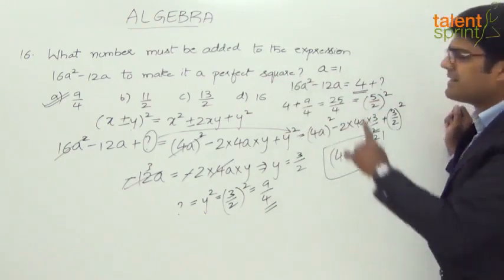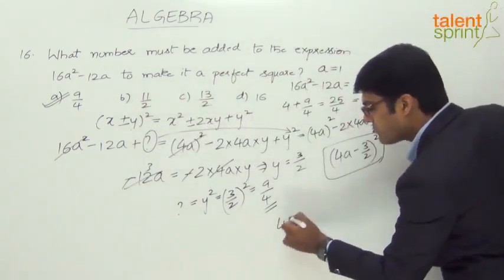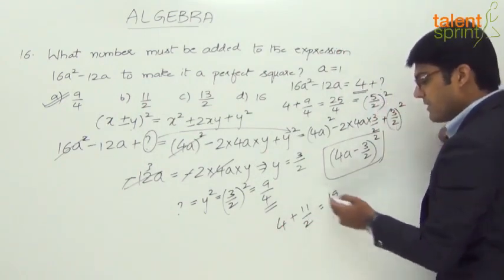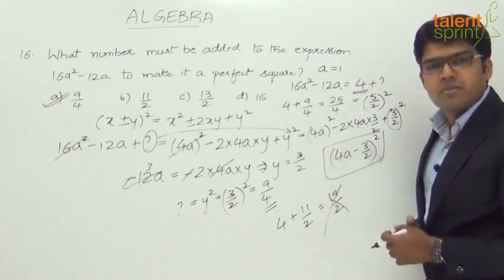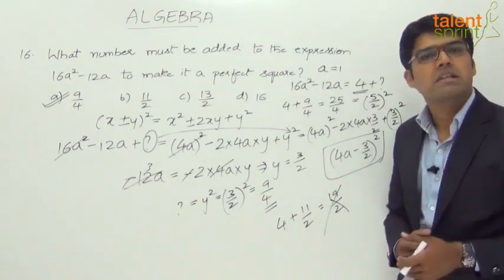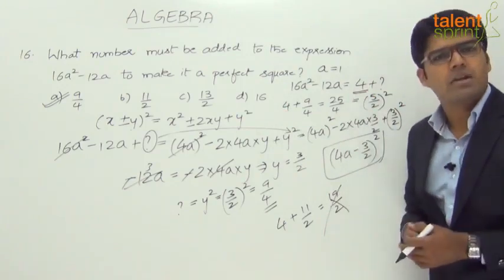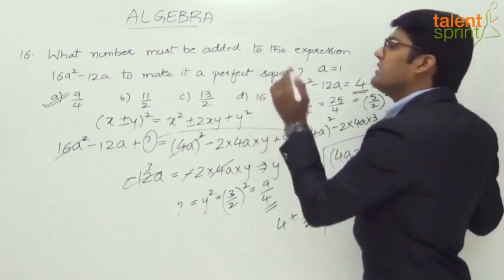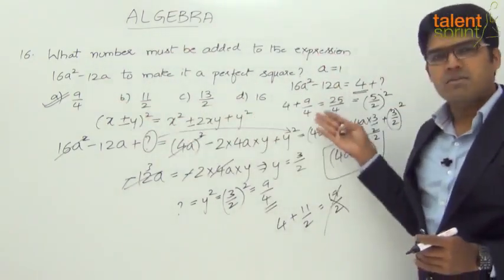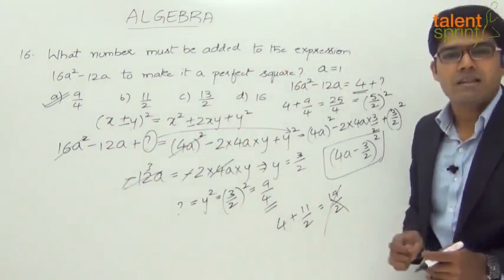Let's verify the other options. For option B, 4 + 11/2 = 19/2, which is not a perfect square. For option C, 4 + 13/2 = 21/2, also not a perfect square. For option D, 4 + 16 = 20, and 20 is not a perfect square. So all other options are ruled out. Either method — algebraic comparison or substituting a value for a — confirms the answer is 9/4.